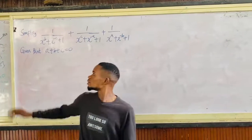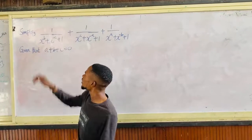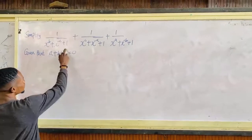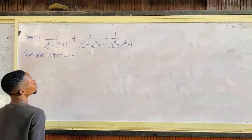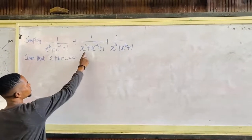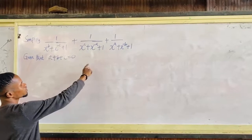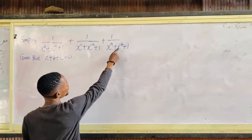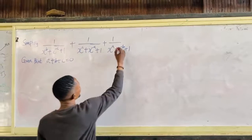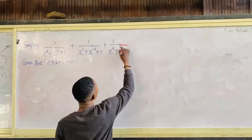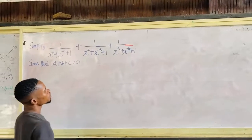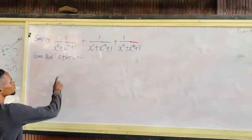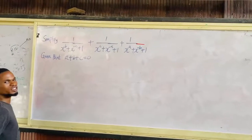Okay, simplify: 1 over x to the power b plus x to the power minus c plus 1, plus 1 over x to the power c plus x to the power minus a plus 1, plus 1 over x to the power a plus x to the power minus b plus 1. Given that a plus b plus c is 0.